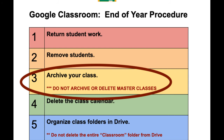Step three is to archive your class. When you archive, it places your class in a separate area within Google Classroom and preserves the class materials. You won't see it in your active classes on the classes page, but you can access it if you need it.